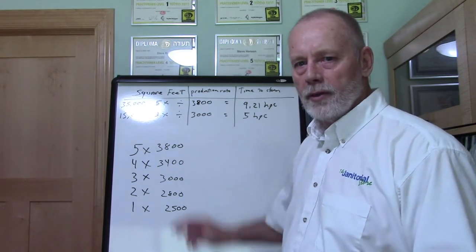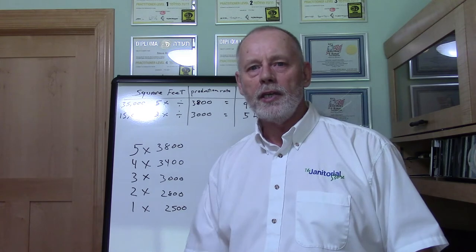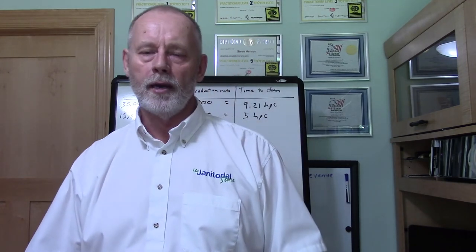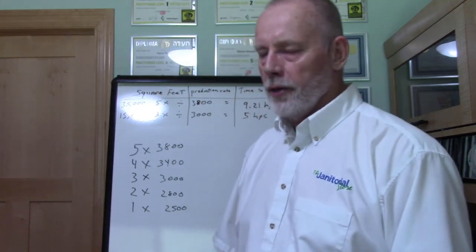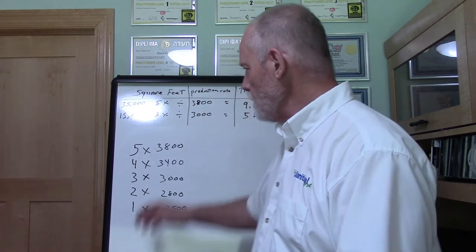When talking about production rates of 3,800 to 5,500 square feet per hour, those are typically achievable in a team cleaning situation. In team cleaning you can reach 5,500, 6,500, or even higher square feet per hour. In zone cleaning, where one person handles all the various tasks, it's very difficult to hit those numbers unless you're doing some type of skip cleaning, collaborative cleaning, or a similar system. Most companies use either zone cleaning or team cleaning, and depending on the facility you may use a combination of both.